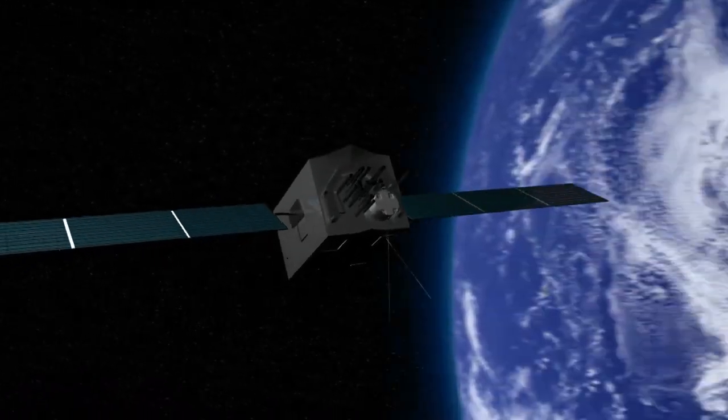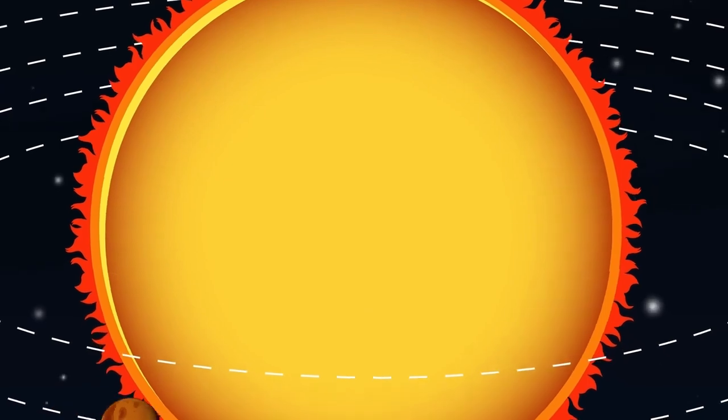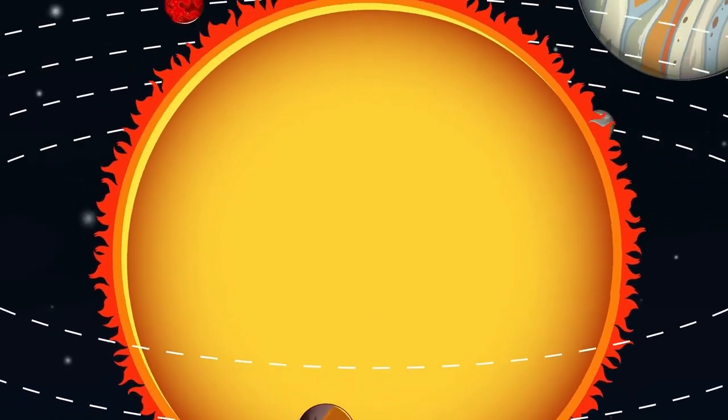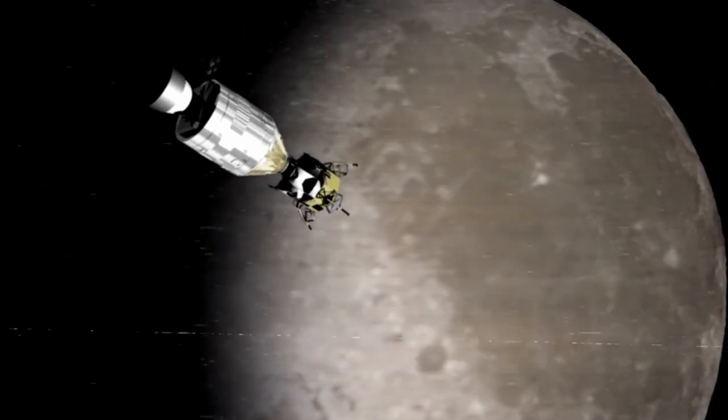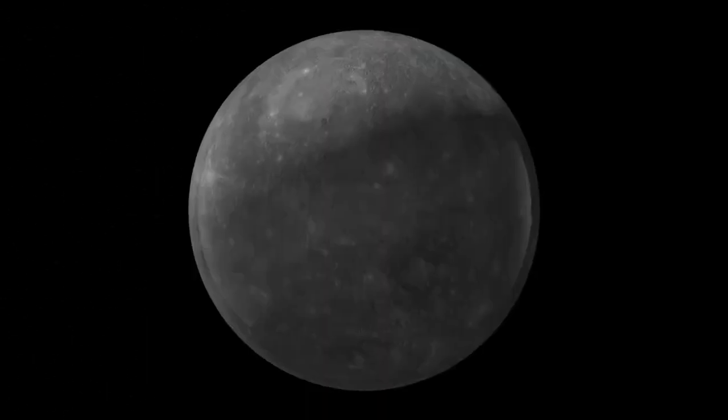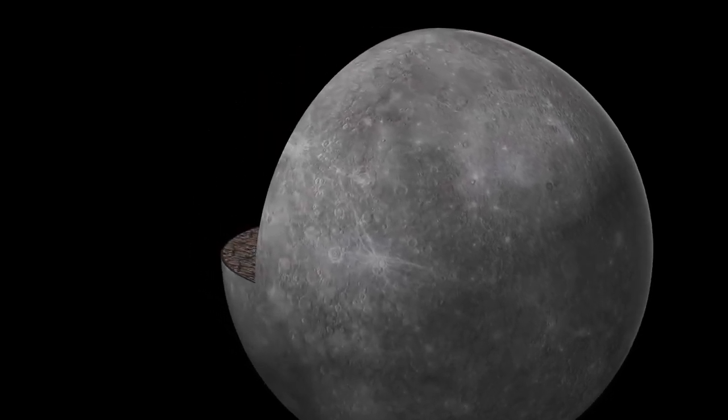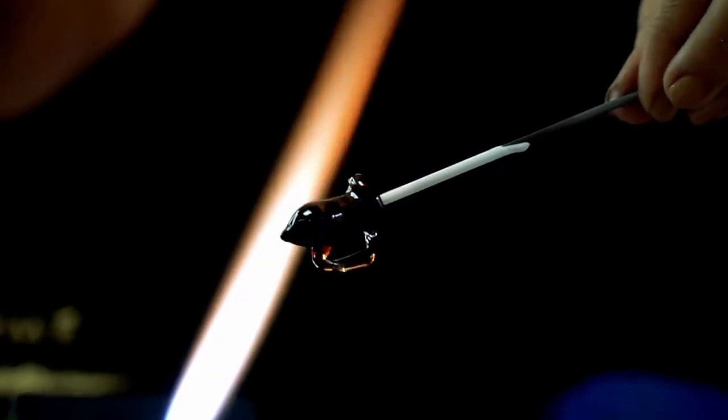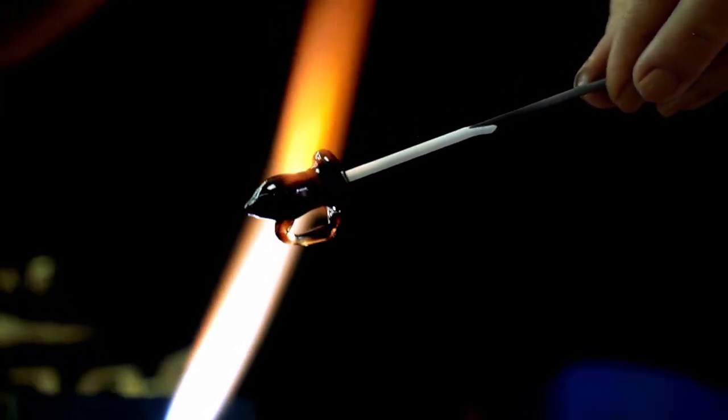For a long time, Pluto remained a remote enigma, shrouded in frozen obscurity. Even after the landmark 2015 flyby by NASA's New Horizons, many of Pluto's characteristics remained uncertain. With the help of powerful infrared imaging and exceptional resolution, scientists are now able to observe Pluto with an unprecedented level of detail. This new insight has profound implications.